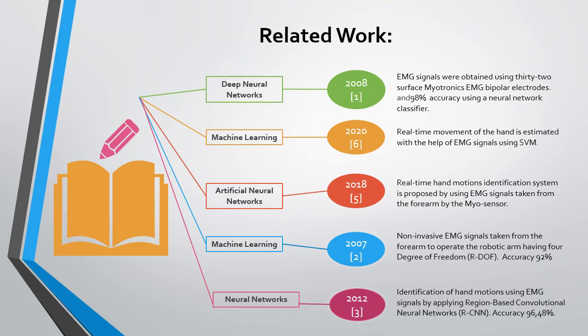Similarly, in study 3, researchers used neural networks where data was taken using electrodes placed on the forearms of the participants. The obtained results are very effective and the real-time testing achieves an accuracy of 96.48%.